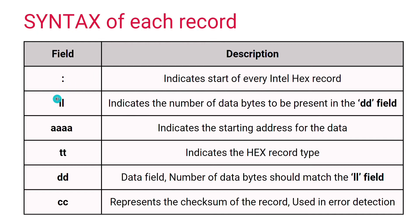Every record starts with a colon. The first field, LL, indicates the record length — specifically, the number of data bytes that will be present in the data field. Next is AAAA, which indicates the starting address for the data. For a 16-bit processor it indicates just the 16 bits; otherwise it indicates the upper 16 bits in the case of 32-bit processors.